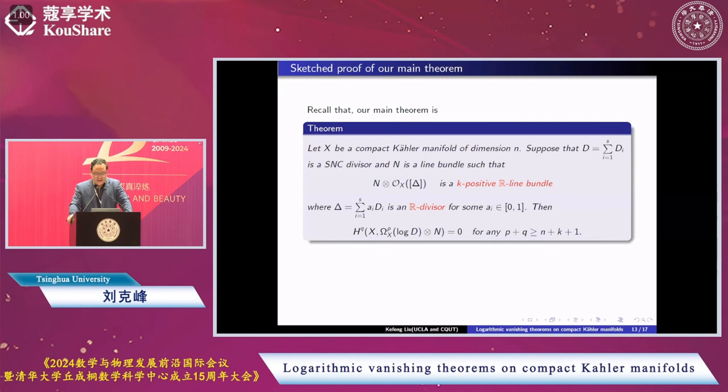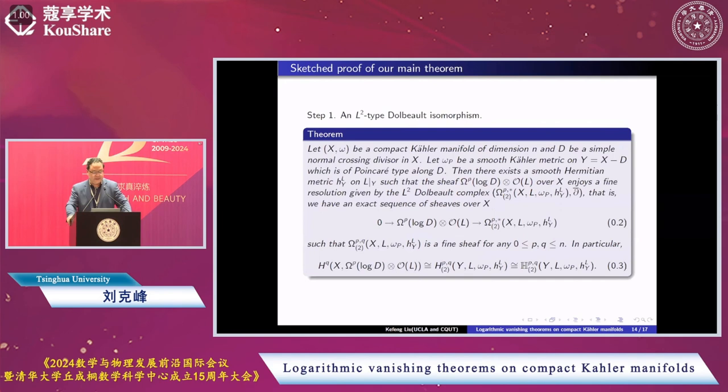Then H^q(omega^p(log D) tensor N) equals 0 for any p plus q greater or equal to n plus k plus 1. There are some standardization of this method and result to Hodge modules by Yao Deng, and also some algebraic geometers gave a different proof on a projective manifold for some of the results in this case.